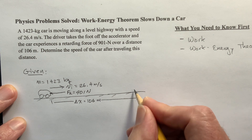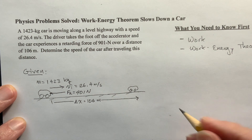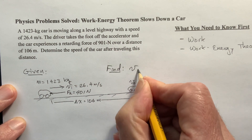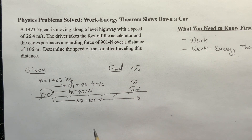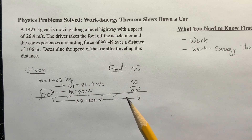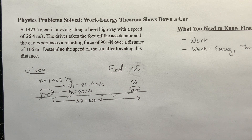Now the car hasn't stopped — well, maybe it stopped, I don't know — but it has slowed down. And so we want to know what is this final velocity — that's what we're trying to find. Quite often when you have a problem like this, where you could use a free body diagram and Newton's second law to figure out the acceleration and then kinematics to figure out the final velocity, quite often you can use energy to do it instead, especially if they're asking for the final velocity. It's often easier to find the final velocity using energy methods. So that's what I'm going to do here.